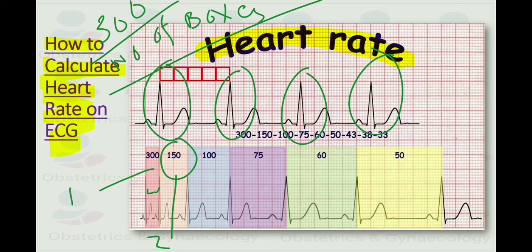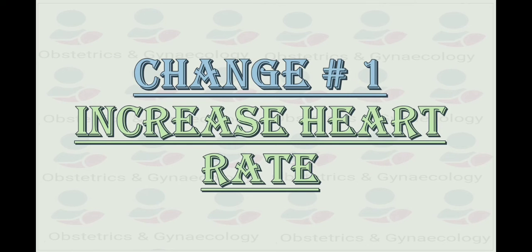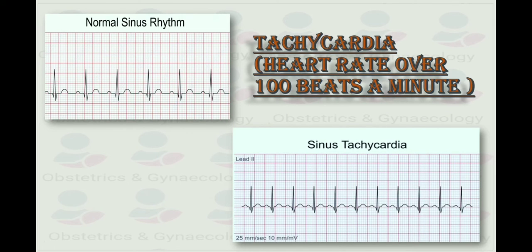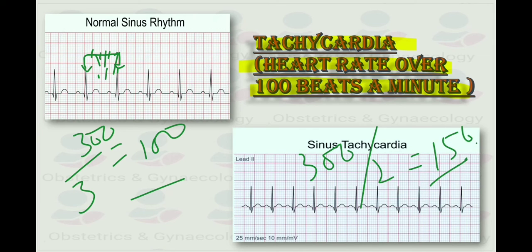Change number one in pregnancy is increased heart rate, which you can see on the ECG strip. There is tachycardia, meaning increased heart rate over 100 beats per minute. In normal sinus rhythm, if you count the number of large boxes between two QRS complexes, here we have three large boxes. So 300 divided by 3, almost 100 beats per minute. But when you check the ECG in pregnancy, we have fewer boxes. 300 divided by 2 gives almost 150 beats per minute. That is what we see in pregnancy and is considered normal. This is called sinus tachycardia. Although 150 is quite high, up to 120 is considered acceptable.